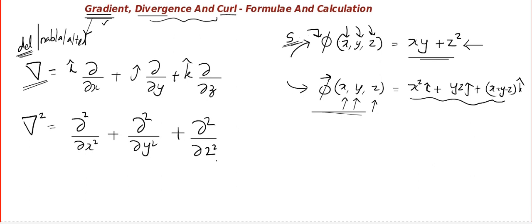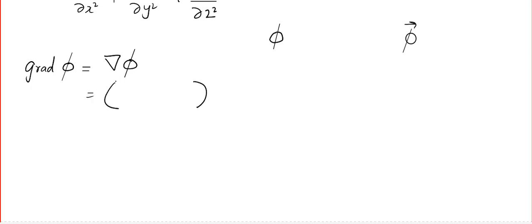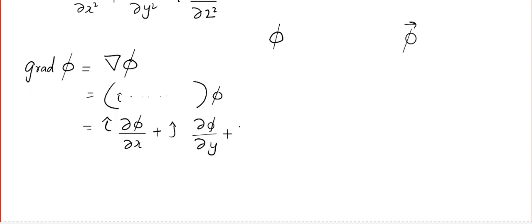Now we need two things: one is a scalar valued function and another is a vector valued function. The gradient of a scalar valued function is denoted grad φ, and it comes from the formula del φ. Since del is i·∂/∂x + j·∂/∂y + k·∂/∂z applied to φ, you end up with i·(∂φ/∂x) + j·(∂φ/∂y) + k·(∂φ/∂z).